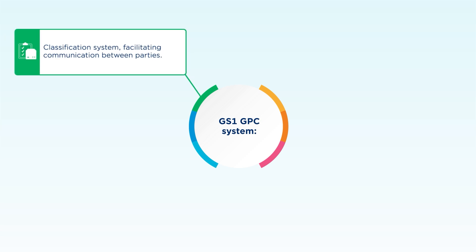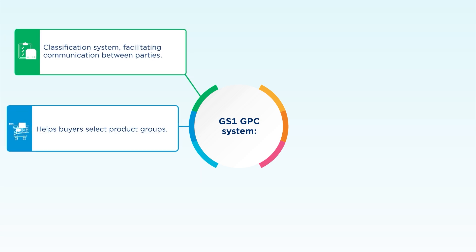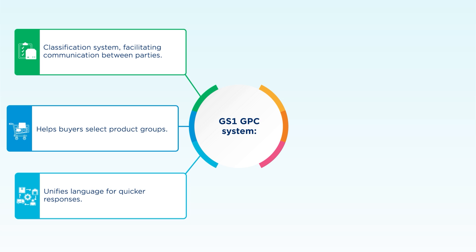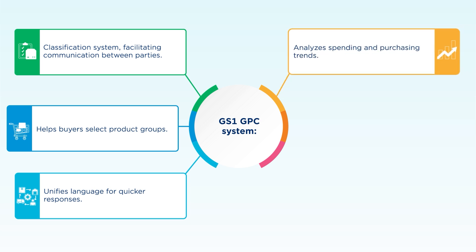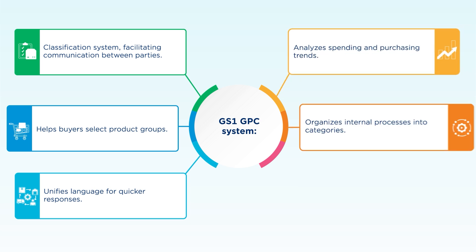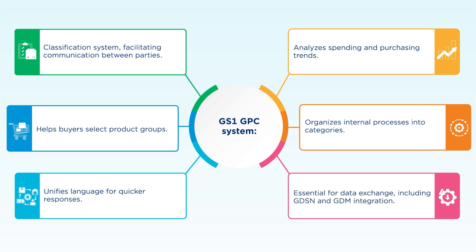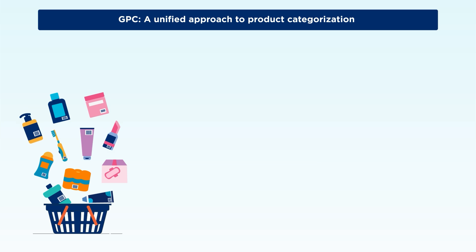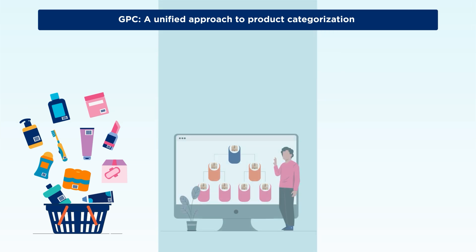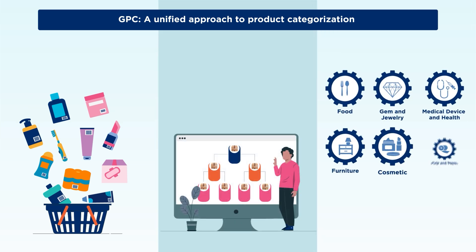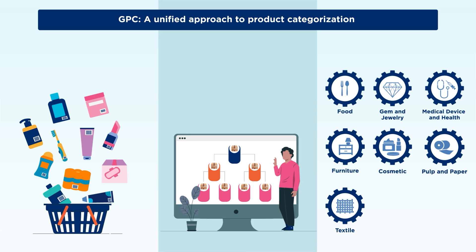GPC aids in uniform product listing, enhancing buying programs, improving supply chain communication, increasing productivity and automation, and reducing common problems such as overstocking and returns. GPC provides a unified approach to product categorization, making it easier to manage and classify products across various markets and industries.